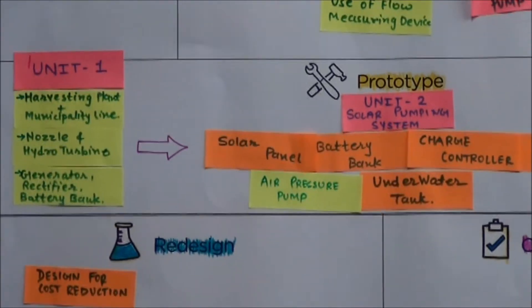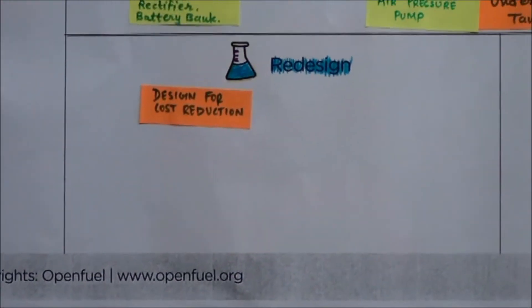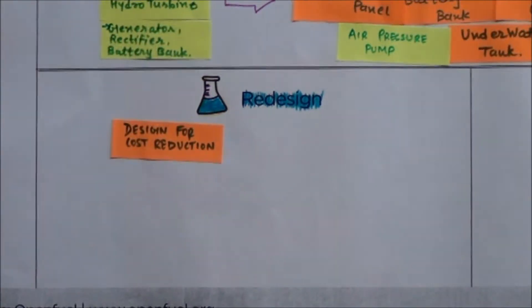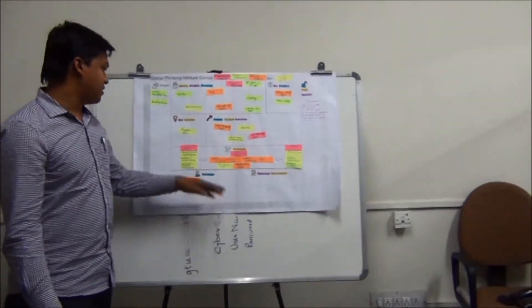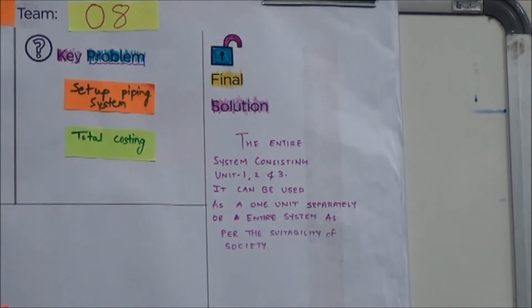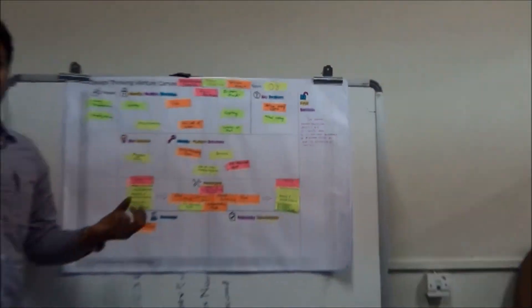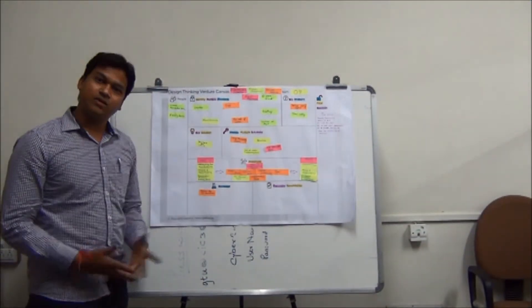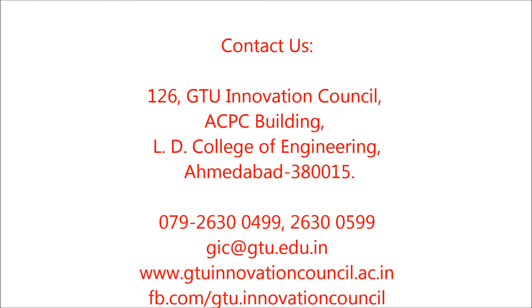The re-revalidation checks whether customers are satisfied. If the customer is satisfied, then there is no necessity of re-revalidation. Finally, we conclude that the entire system consisting of Unit 1, 2, and 3 can be used separately or the entire system can be used with each unit connected with each other. Thank you.